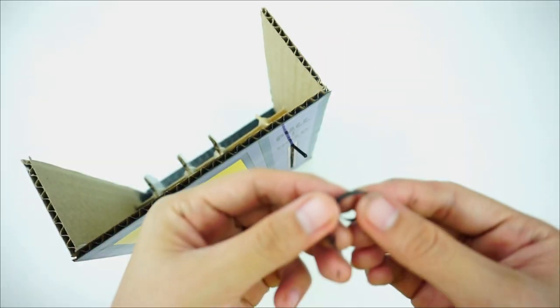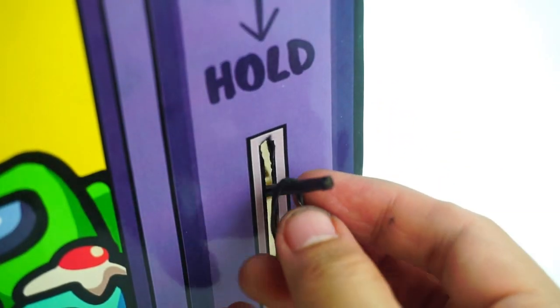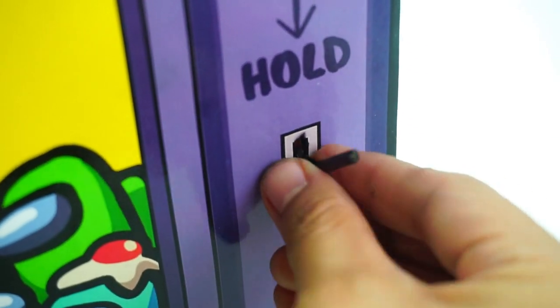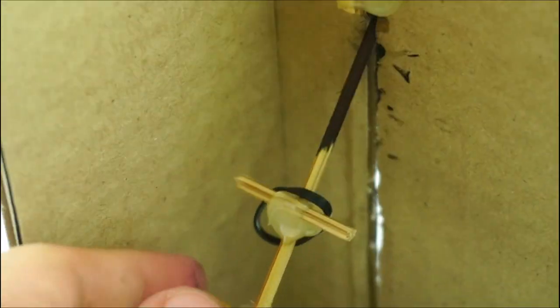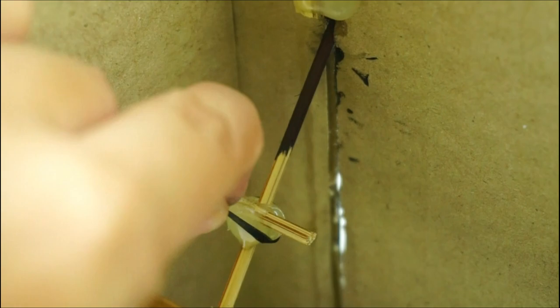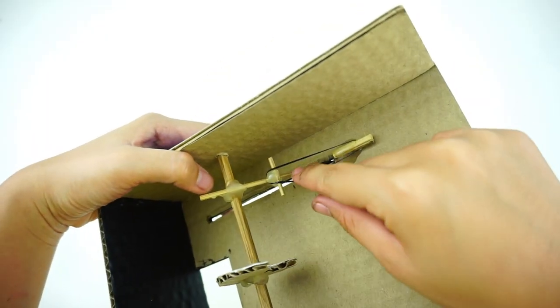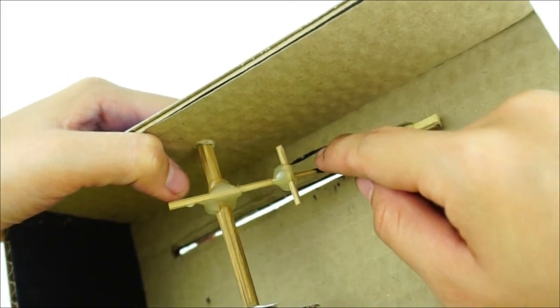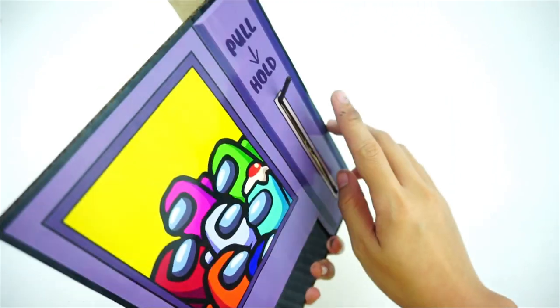Once that's done, insert a rubber band like so. This will help the handle bounce back after pulling it.